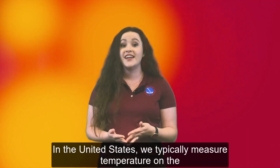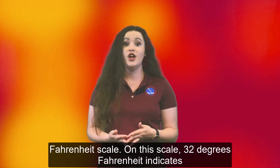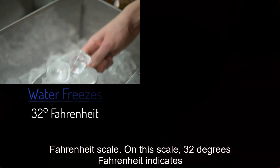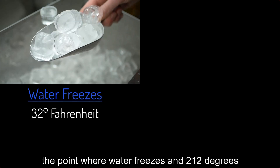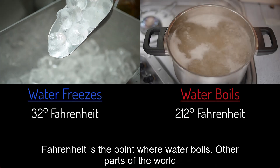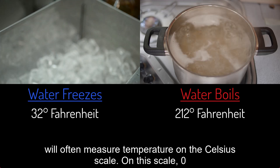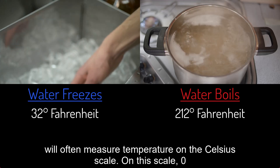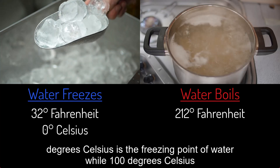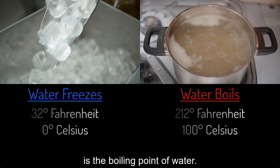In the United States, we typically measure temperature on the Fahrenheit scale. On this scale, 32 degrees Fahrenheit indicates the point where water freezes, and 212 degrees Fahrenheit is the point where water boils. Other parts of the world will often measure temperature on the Celsius scale. On this scale, 0 degrees Celsius is the freezing point of water, while 100 degrees Celsius is the boiling point of water.